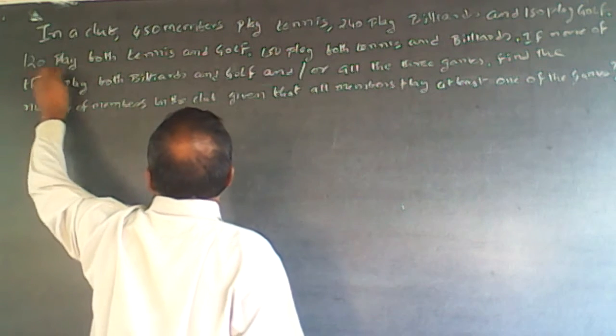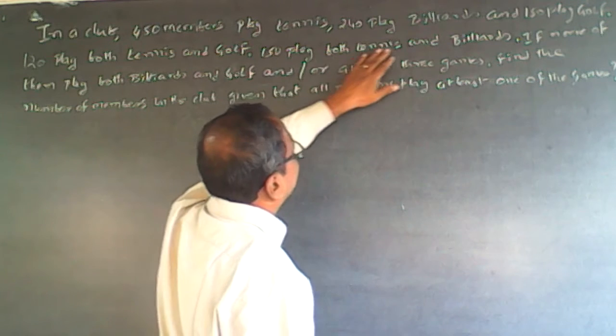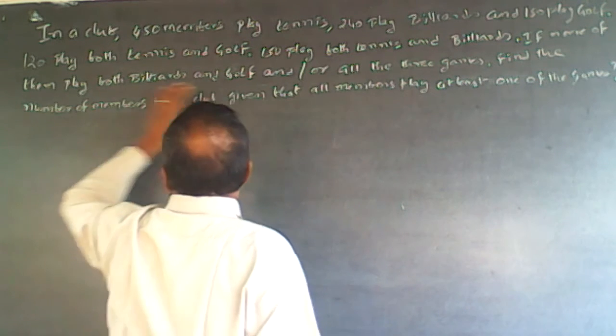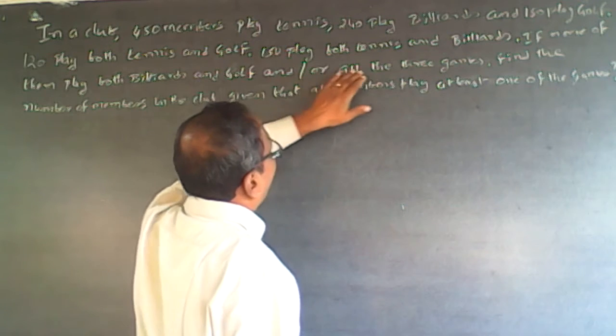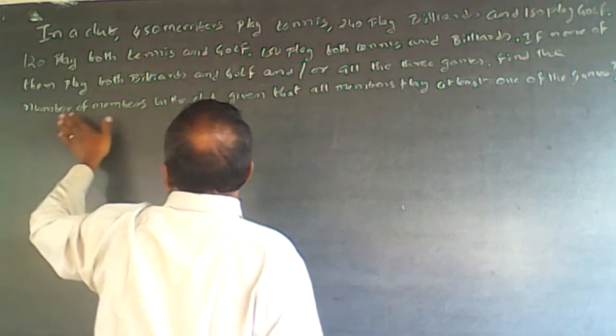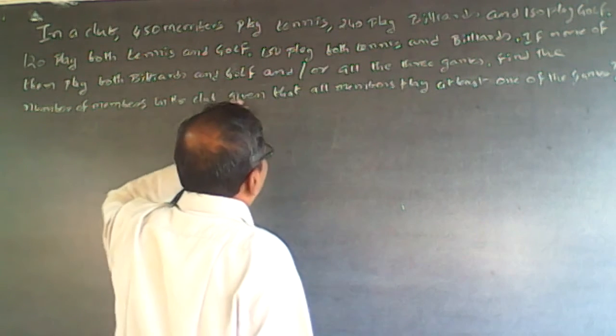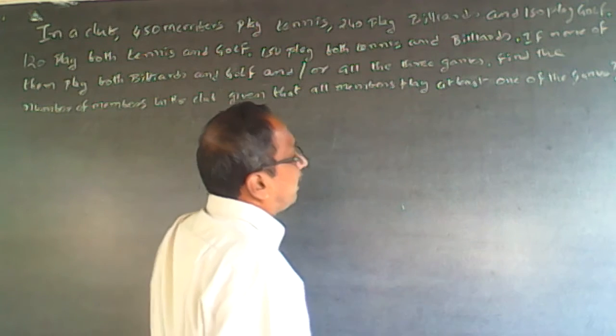If 120 played both tennis and golf, 150 played both tennis and billiards, if none of them played both billiards and golf and all three games, find the number of members in the club, given that all members play at least one game.